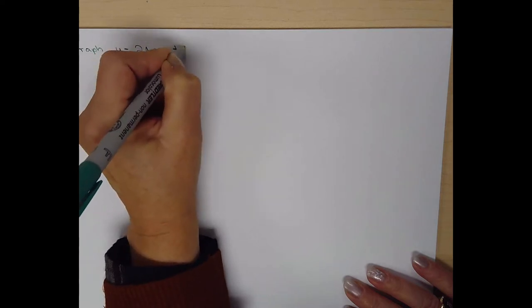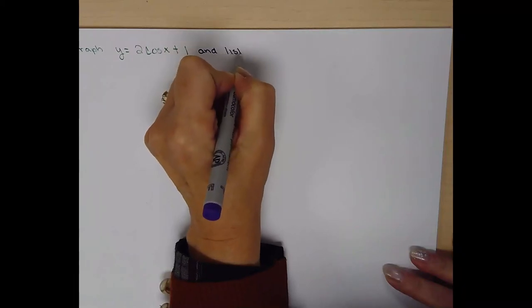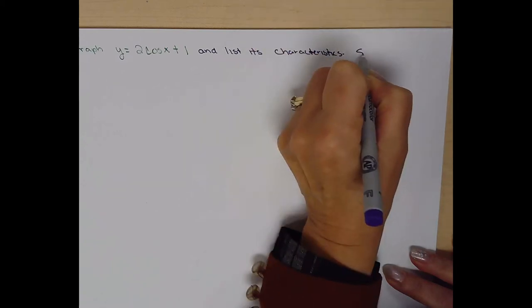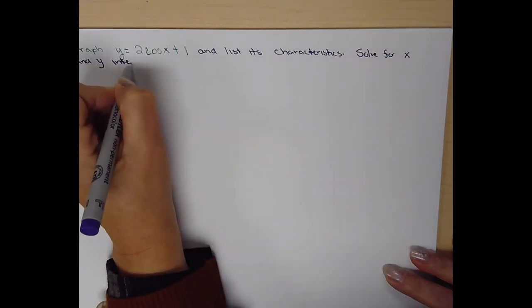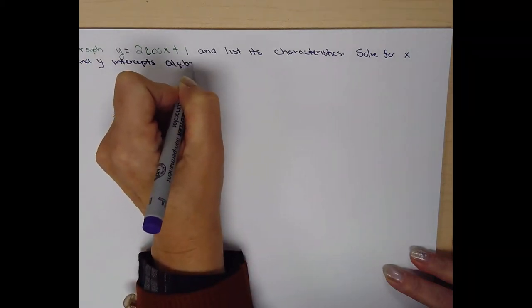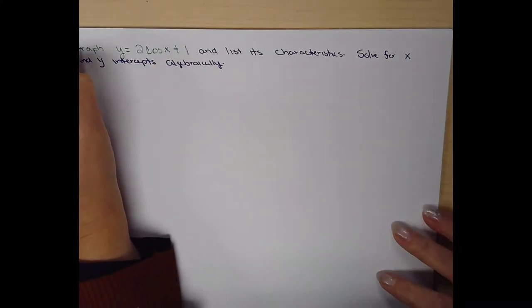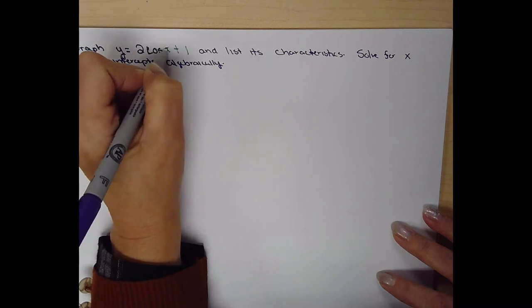Go sideways — this is what I'm asking you to do: graph y equals 2 cosine of x plus 1, and list its characteristics. Solve for x and y intercepts algebraically — 2 times the cosine ratio of x plus 1.